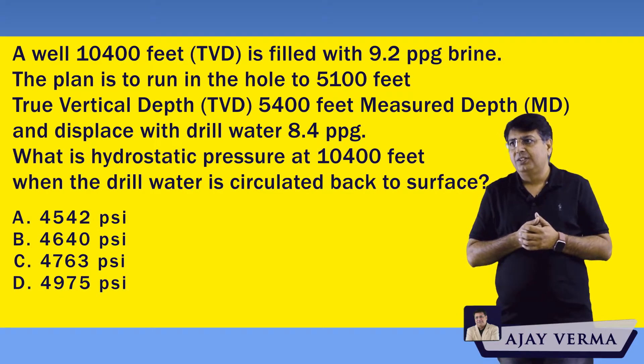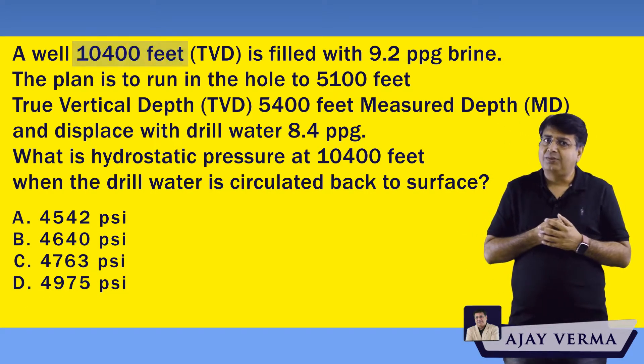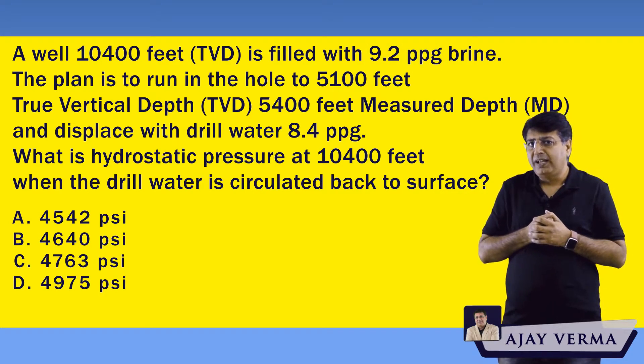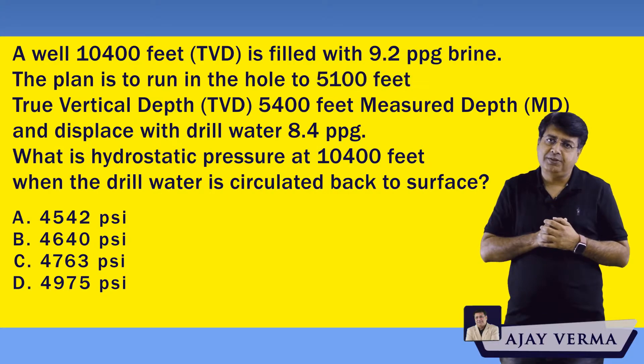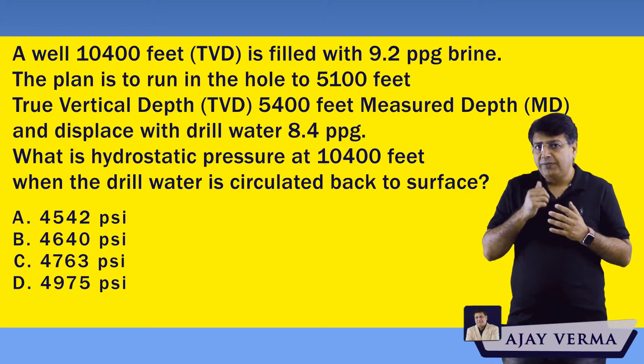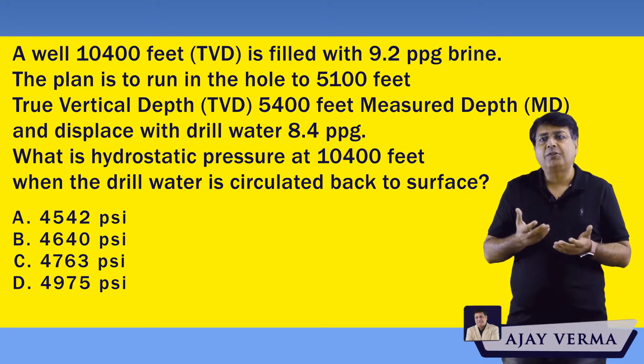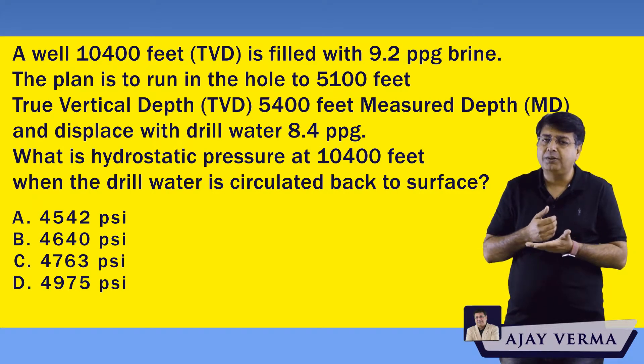This question is regarding hydrostatic pressure calculation. The well already has some mud weight, but if we run to 5,100 feet and displace lighter fluid, what will happen to bottom hole pressure or hydrostatic pressure at the bottom? The well TVD is 10,400 feet, there is a brine in the wellbore with a density of 9.2 ppg. The plan is to run the bit toward 5,100 feet TVD and 5,400 feet MD. If we circulate a lighter fluid of 8.4 ppg water, what will be the hydrostatic pressure at the bottom?